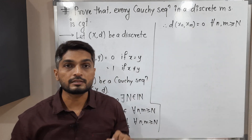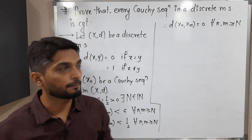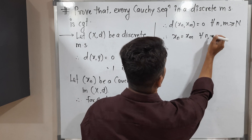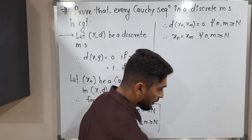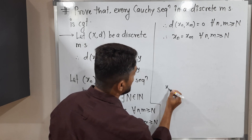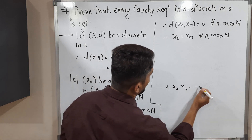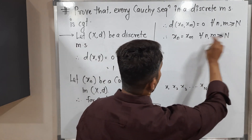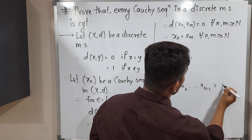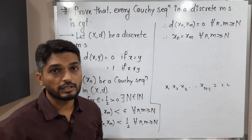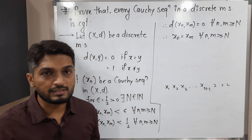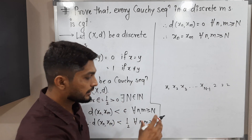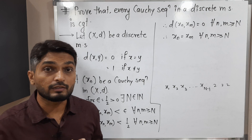So here, we are getting distance 0, which means x_n and x_m are both the same. Therefore, x_n is equal to x_m for all n, m greater than or equal to capital N. That means we have a sequence x_1, x_2, x_3, and so on — up to x_{N-1} the terms can be different, but after capital N all terms are equal. We call this an eventually constant sequence.